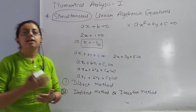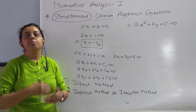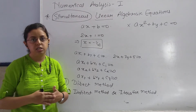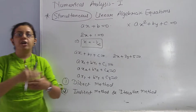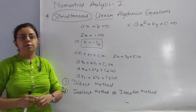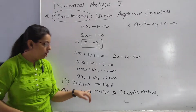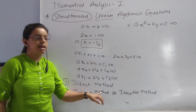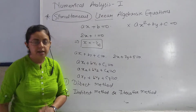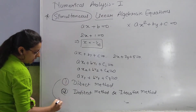In indirect method and iterative method, as you keep taking steps, you get approximate values. In a certain number of steps you get approximate values — those come under indirect method and iterative methods.